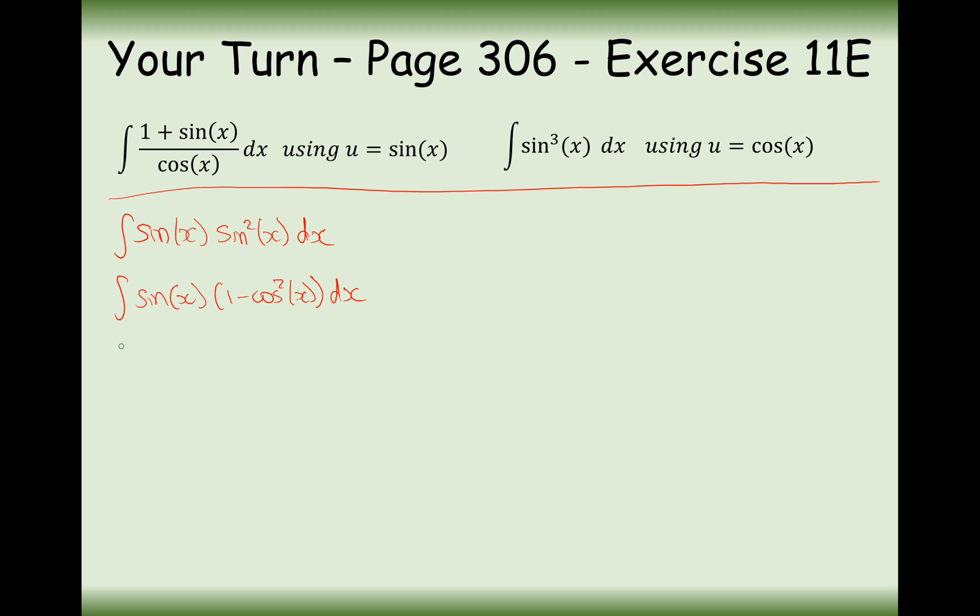Just like this. And now we can put u in. We've now got sine x 1 minus u squared dx. We still haven't sorted out this dx at the back yet. So let's do that now. Du by dx is equal to minus sine x.